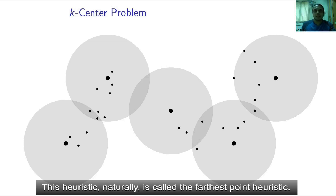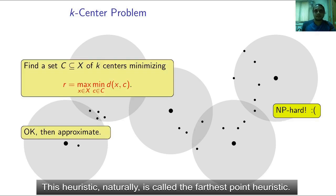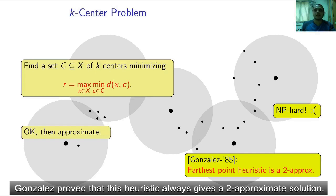This heuristic naturally is called the farthest point heuristic. Gonzalez proved that this heuristic always gives a two approximate solution.